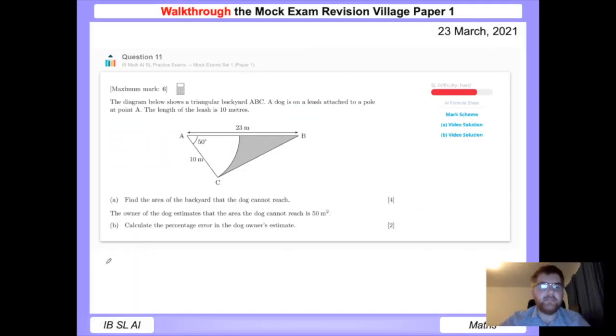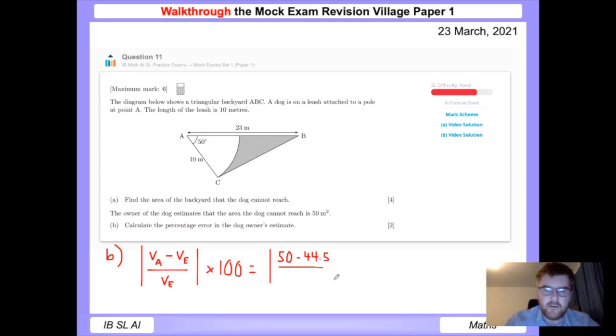Okay, and for part b we want to work out the percentage error compared to the estimate Leonie the dog owner used, which is 50 square meters. Now this comes directly from the formula sheet again, so we want to do va, the approximate value minus the exact value, divided by the exact value. You'll see this on your formula sheet. You want to take whatever the positive version of this is and then times 100. So in this case, we are going to put in the estimate, which is 50, the exact value, which is 44.5, over the exact value, which is 44.5, and then we're going to times by 100.